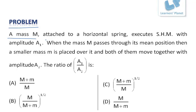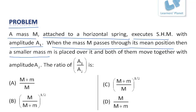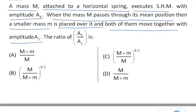A mass M attached to a horizontal spring executes SHM with amplitude A1. When the mass M passes through its mean position, a smaller mass m is placed over it and both of them now move together with amplitude A2. We have to find out the ratio of A1 and A2.